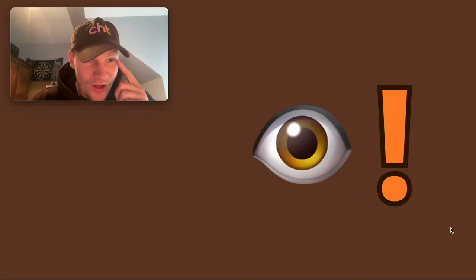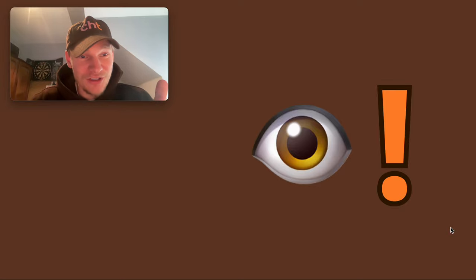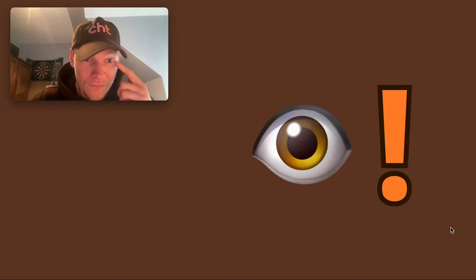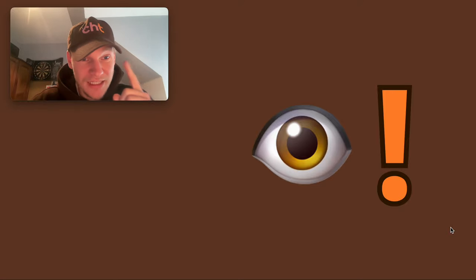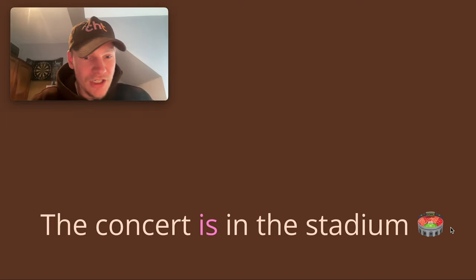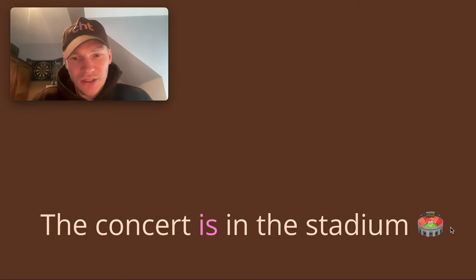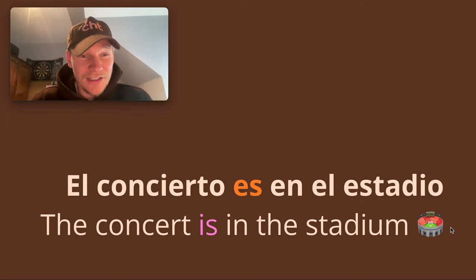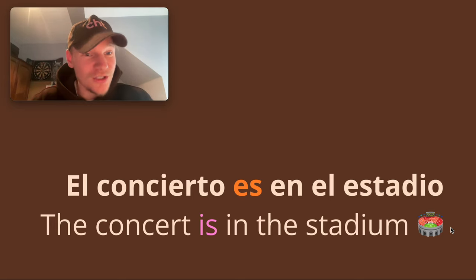Ojo, chicos — this is the bit that's going to annoy you. It annoyed me when I first found out about it. Ojo means watch out, be careful. So you say, OK, Harry — location, estar, perfect. So in English, if I want to say 'the concert is in the stadium' and translate that to Spanish — location, it's a stadium, concert happening in the stadium, estar. And I go, no. And you're going to quit the video, throw a tantrum. It's flipping annoying.